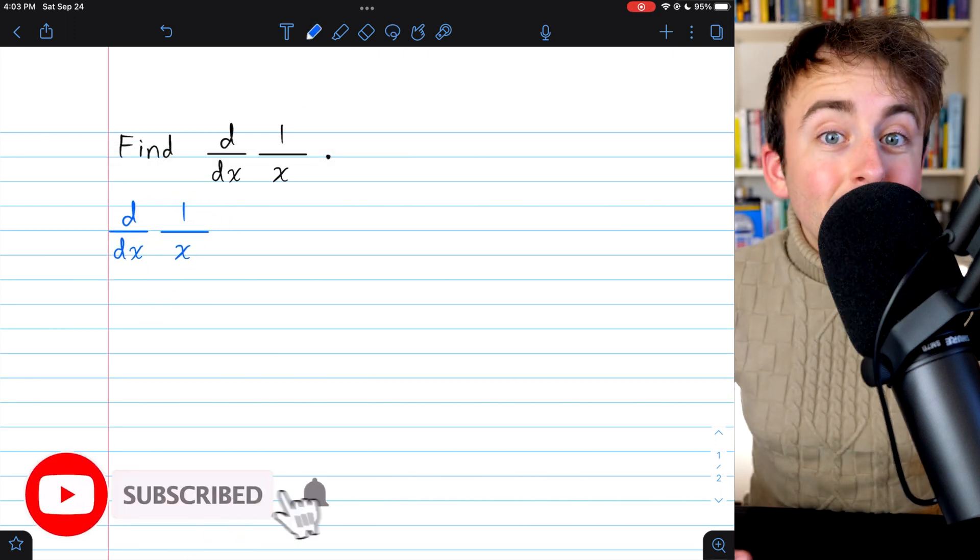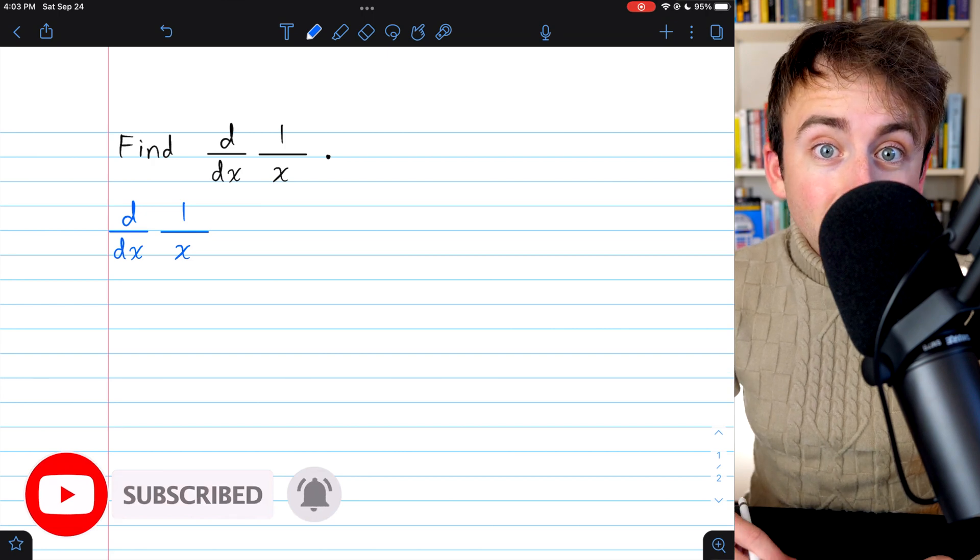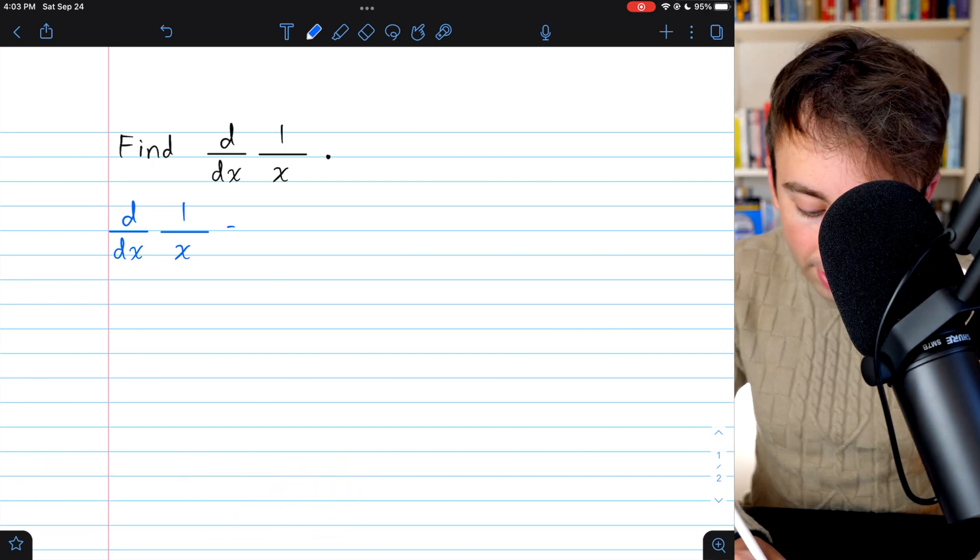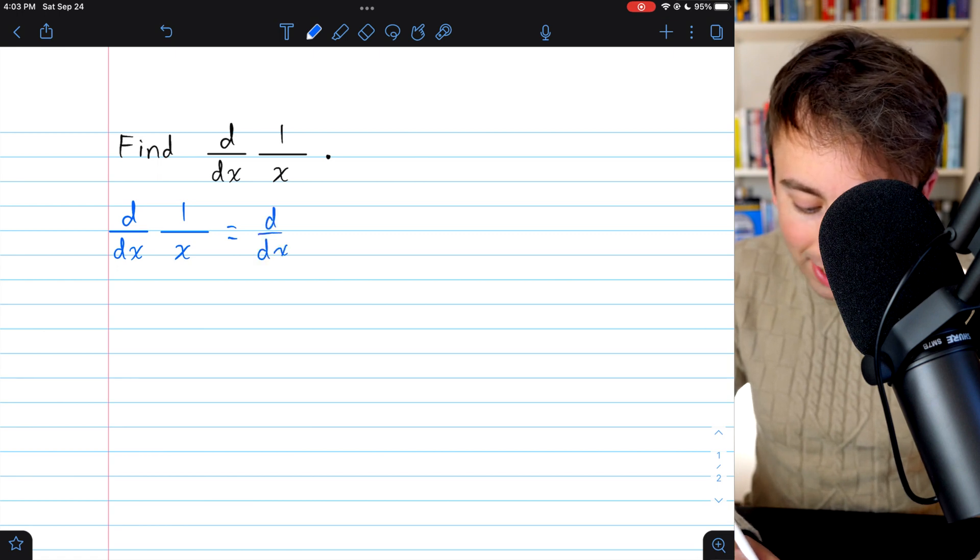The power rule is a super easy rule for finding derivatives. So to take care of this, we should just rewrite 1 divided by x as a power. We can do that really easily.